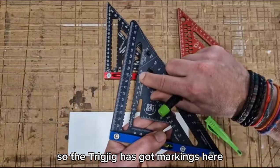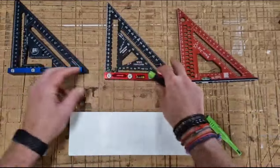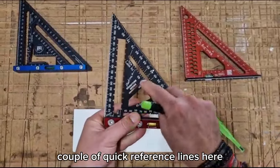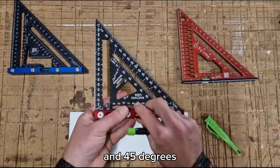So the Trig Jig has got markings here for your one-third bird's mouth on common UK timber sizes. The Martinez has got a couple of quick reference lines here so that'll give you 22 and a half degrees and 45 degrees.